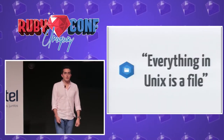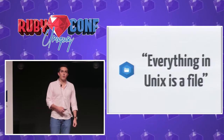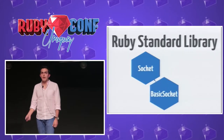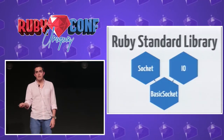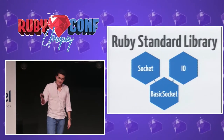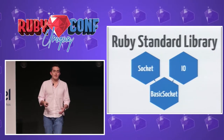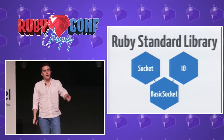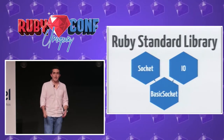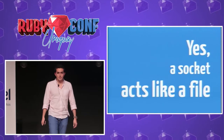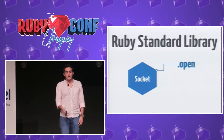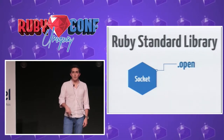Everything in Unix is a file, so let's see how this is reflected in Ruby. In Ruby we have socket classes. We have BasicSocket, which inherits from IO. We can see how socket applies the same methods as IO, and files are used in the same way — a socket acts like a file. In a socket, we have methods available like open, close, read, and write.